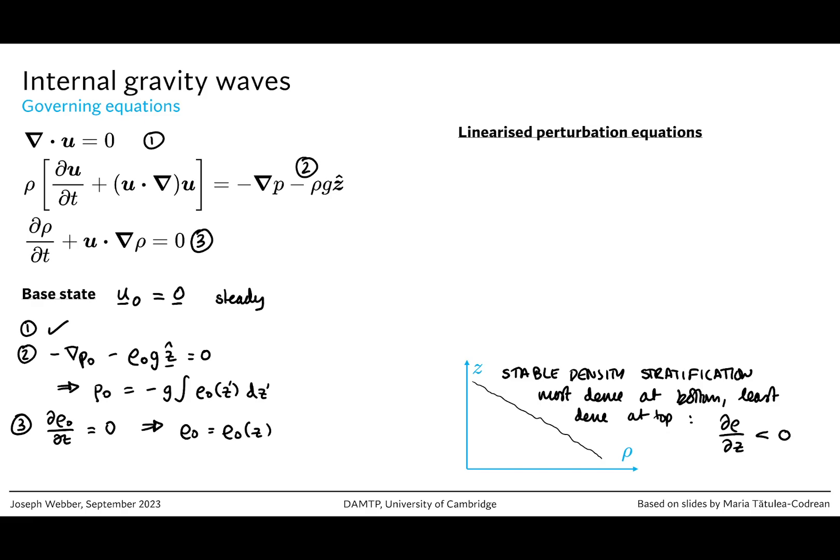Now let's look at the linearized perturbation equations. We're going to take the velocity field to be u0 plus u tilde. We're going to take our pressure field to be p0 plus p tilde, and our density field to be rho0 plus rho tilde. All of these tilde quantities are small but they're functions of space, and so we ignore any products of them when seeking linear perturbation equations. Equation 1 tells us that the divergence of u tilde is zero. This is what we'd expect because the divergence of u0 is zero and the divergence of u together has to be zero.